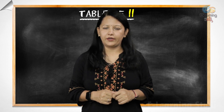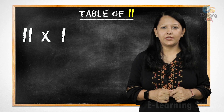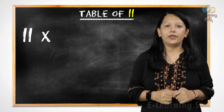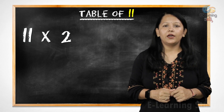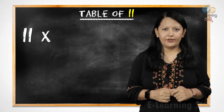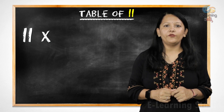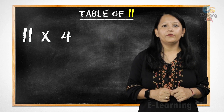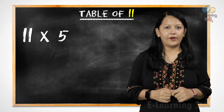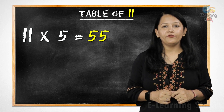Let's start. 11 1s are 11, 11 2s are 22, 11 3s are 33, 11 4s are 44, 11 5s are 55.